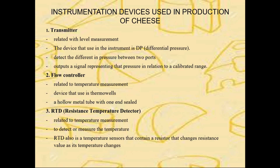Next, the flow controller instrument is related to temperature measurement. The device used is a thermowell, which is basically a hollow metal tube with one end sealed, usually mounted permanently in a vessel or pipework. The last device is an RTD, which is a resistance temperature detector. This device is related to temperature measurement. The RTD detects or measures temperature and is a temperature sensor that contains a resistor that changes resistance value as its temperature changes.